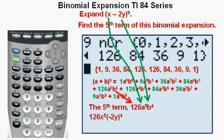This gives us 126X to the power of 5 times negative 2Y to the power of 4. Negative 2 to the power of 4 is 16. So we have 126X to the 5th power times 16 times Y to the 4th power. And simplifying by multiplying the numbers together, we get 2016X to the 5th, Y to the 4th. Which we box in as the 5th term of this binomial expansion is our correct answer.